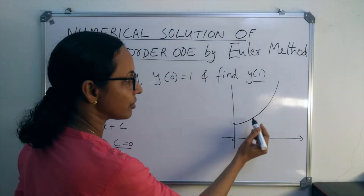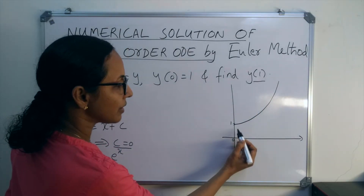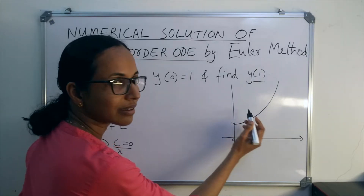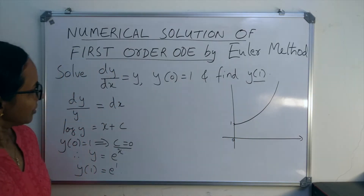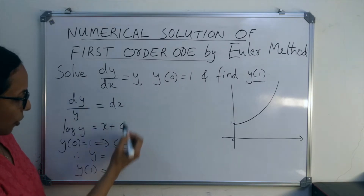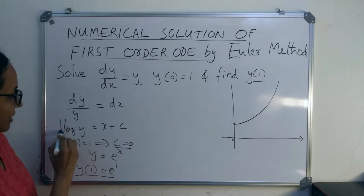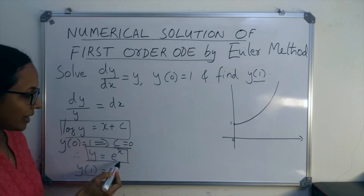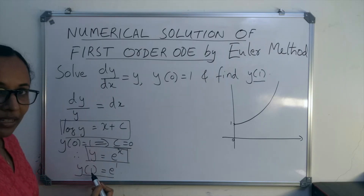So this is the function for the solution: y = e^x. At x = 0, y is given as 1, and with this curve we can find the solution at any value. But in numerical methods, we can obtain this value directly without finding the general solution or the particular solution — we can find the value of the solution at a given point directly.